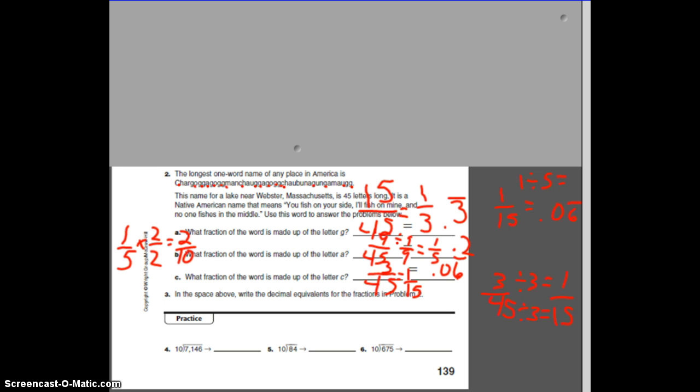All right. Then down here, we've just got our regular dividing that I know you've gotten so good at. I'm going to try and erase some of this so I've got some room to work here. I can move this over and down a little. All right. So we're down here at the bottom. So 7,146 divided by 10.